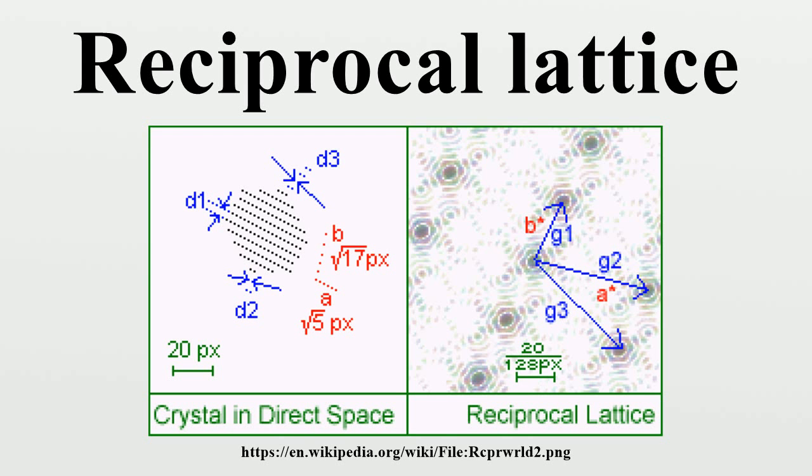Thus it is sufficient to say that if we have G and G', then the sum and difference satisfy the same condition. Thus we have shown the reciprocal lattice is closed under vector addition and subtraction.